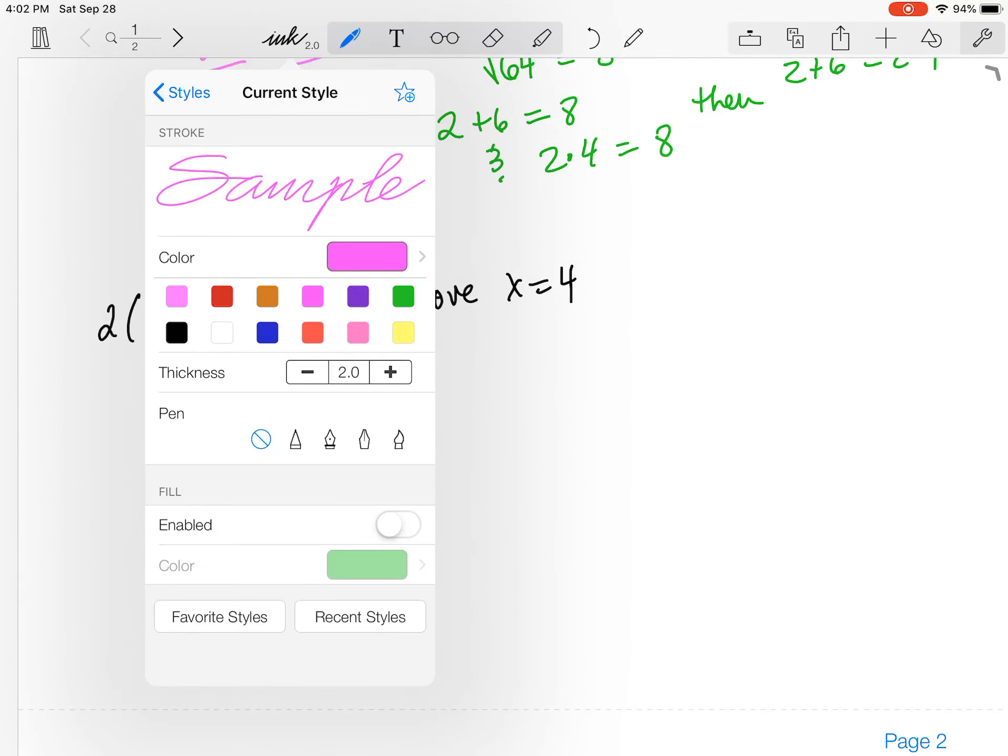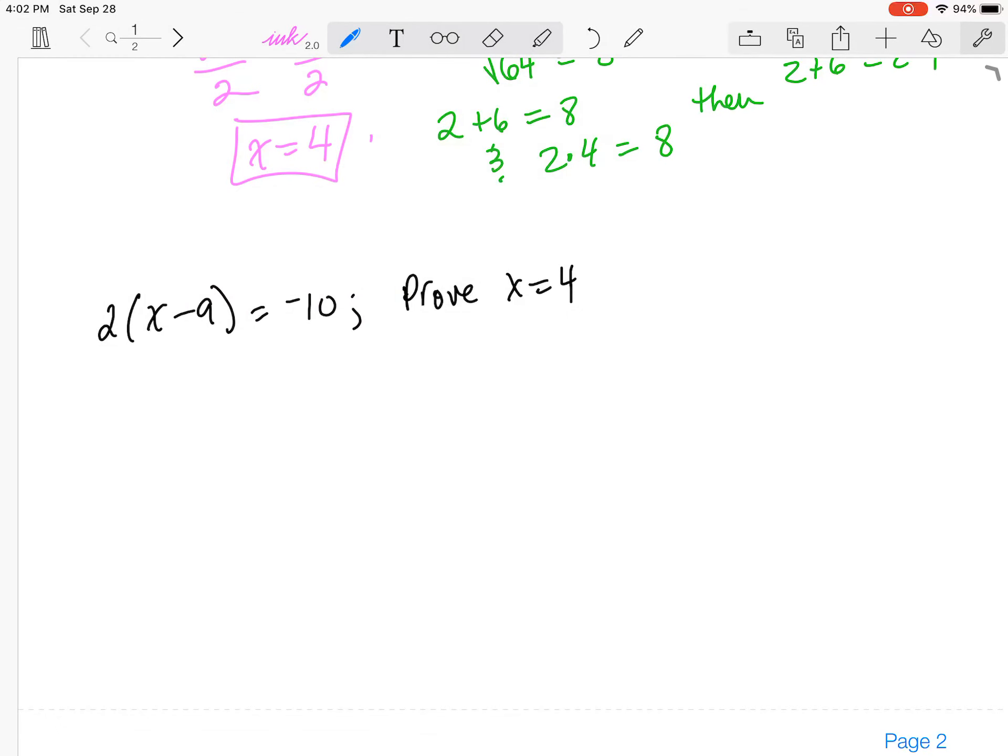Hello, welcome back. In this episode, I'm going to take this equation 2 times x minus 9, and that's equal to negative 10. And I want to prove that x is equal to 4.